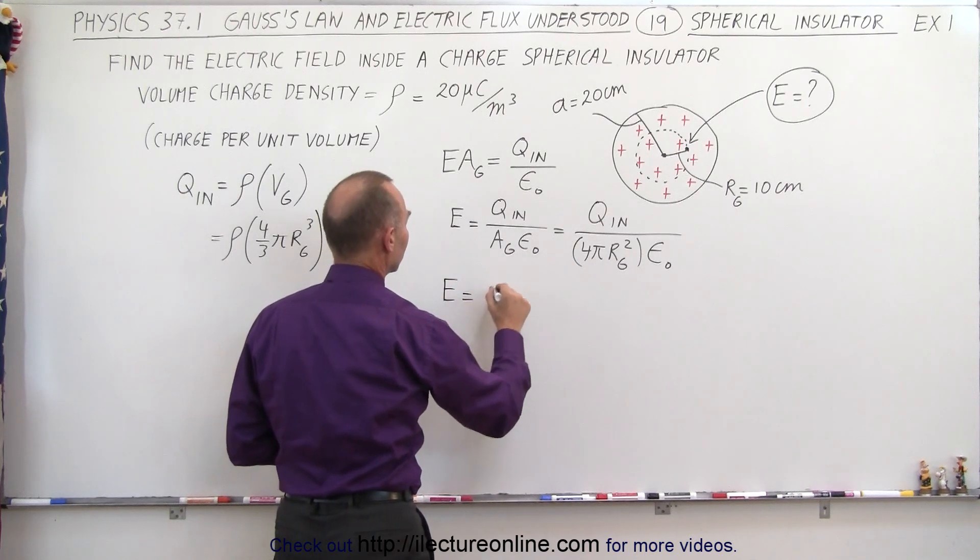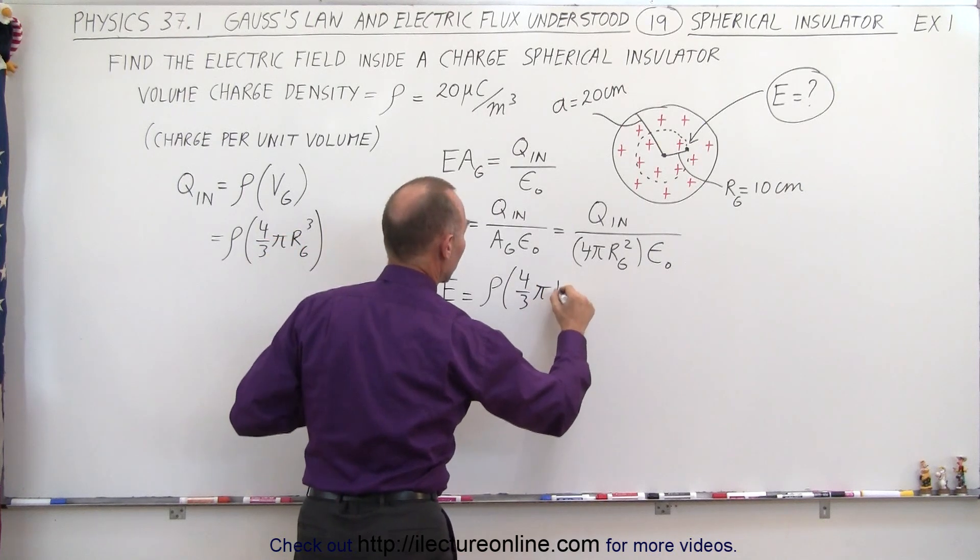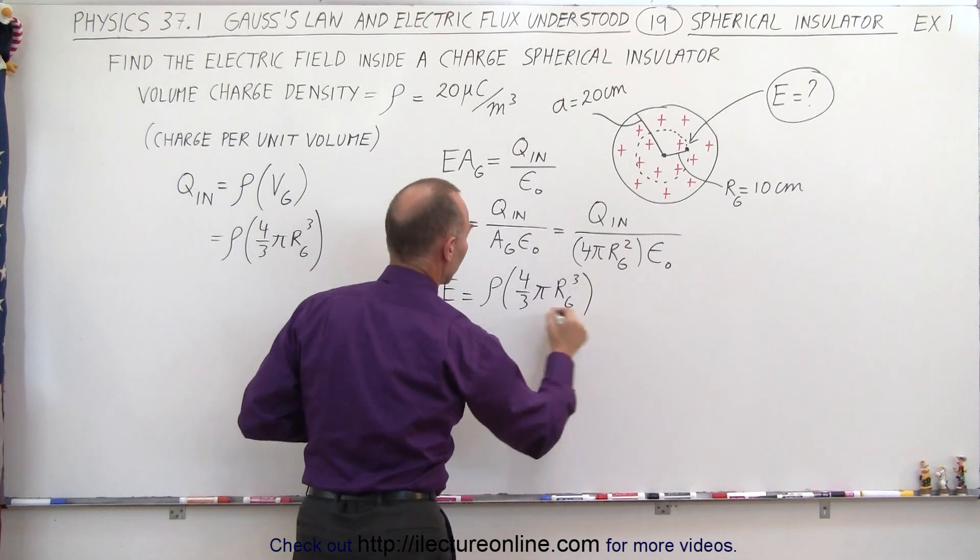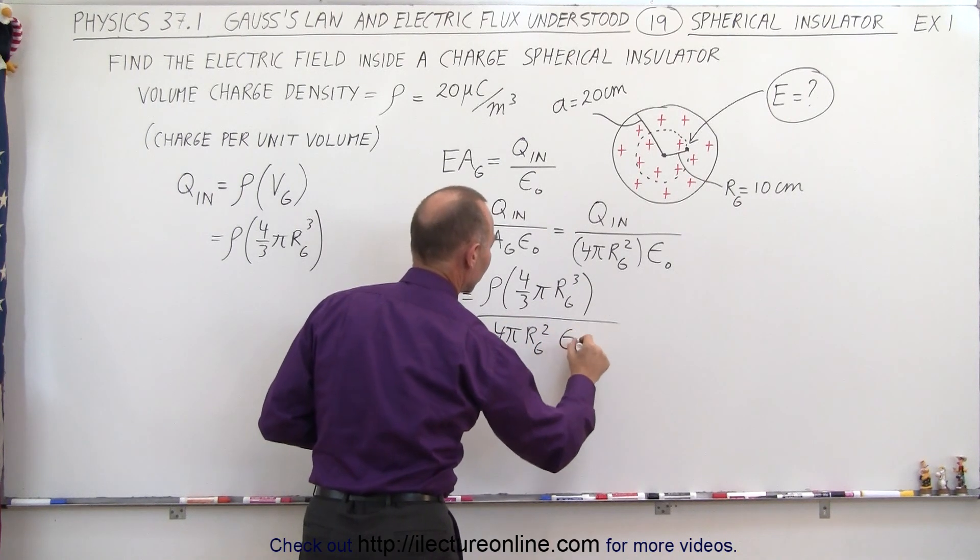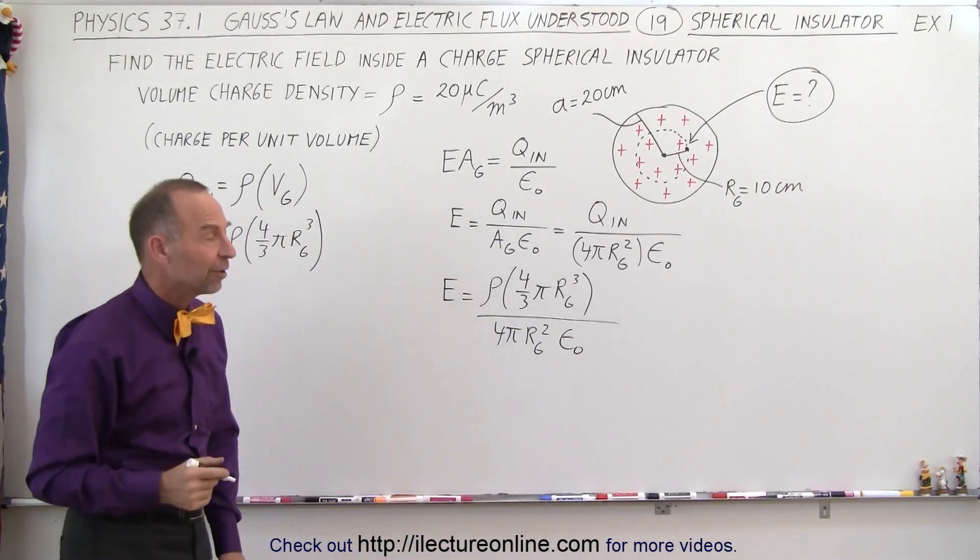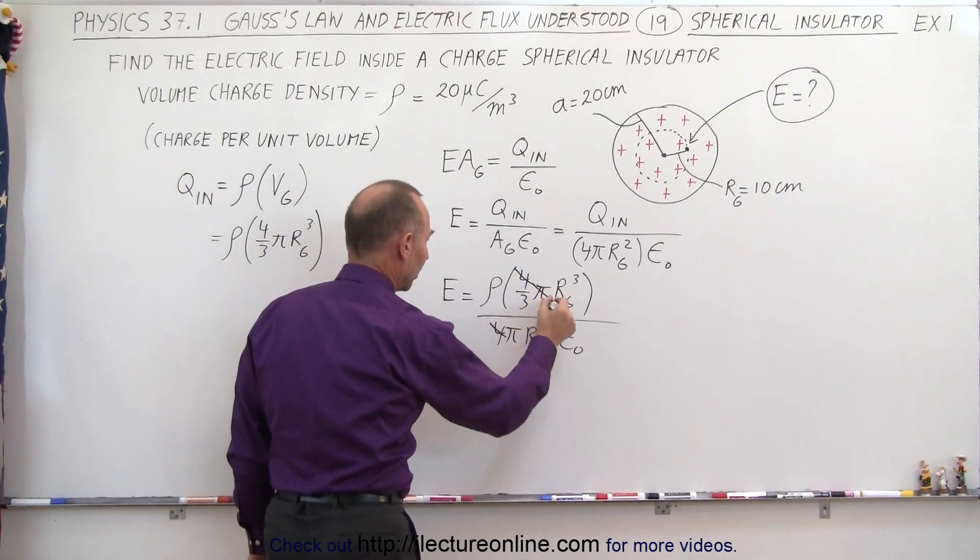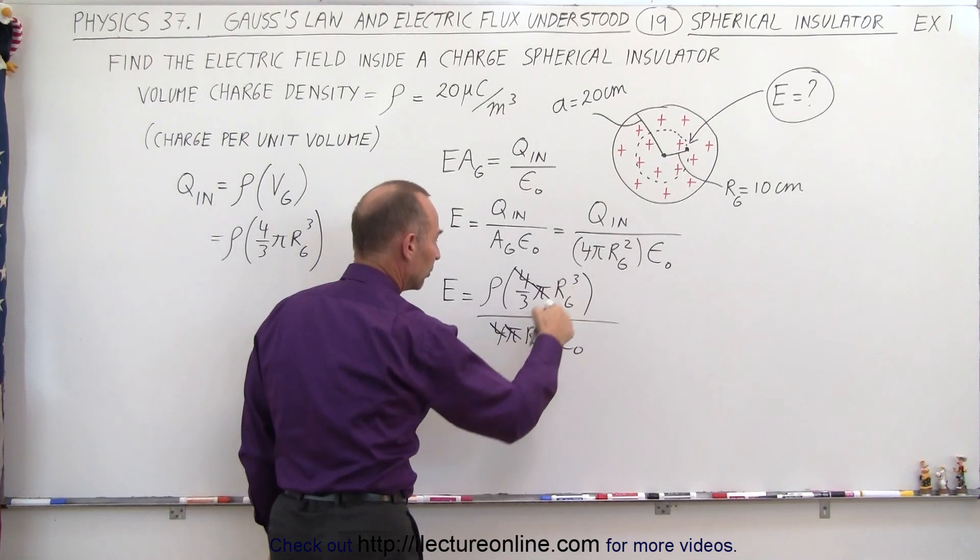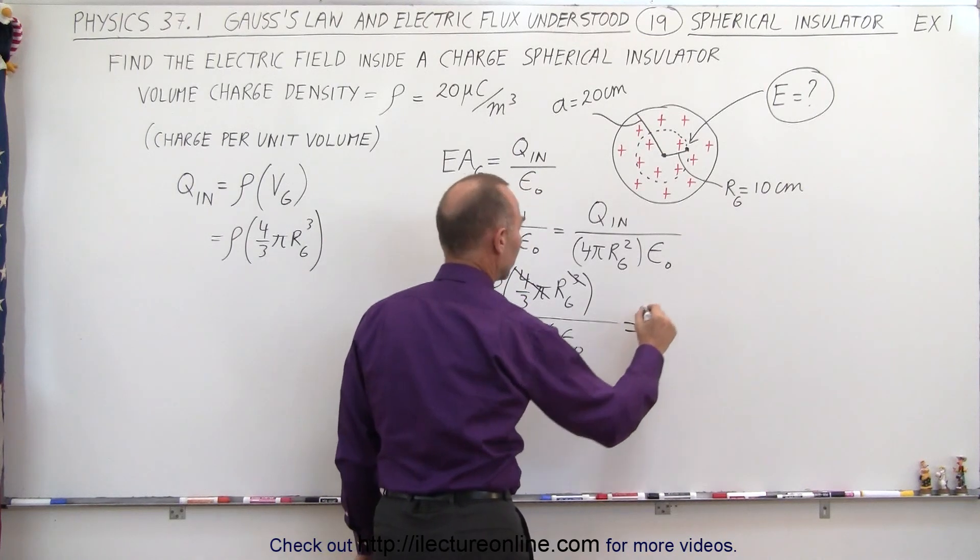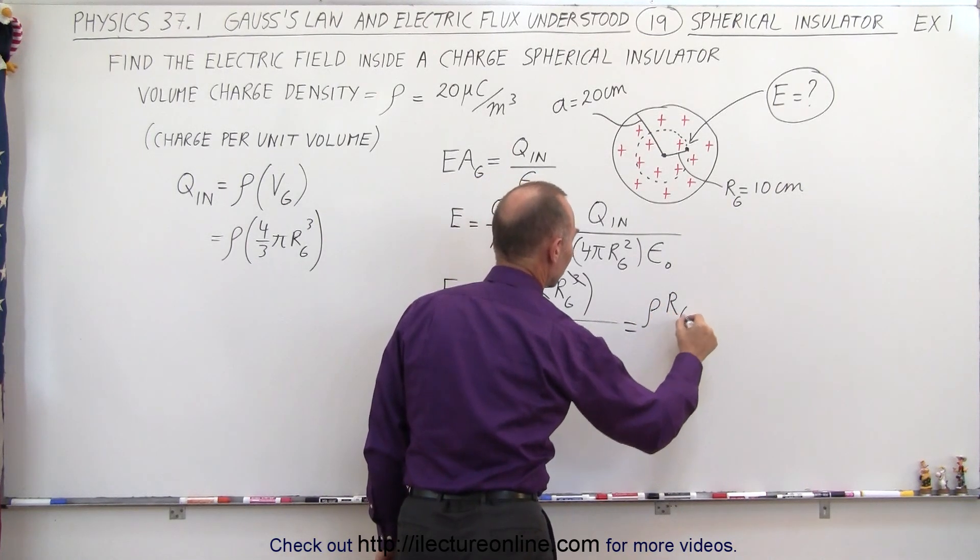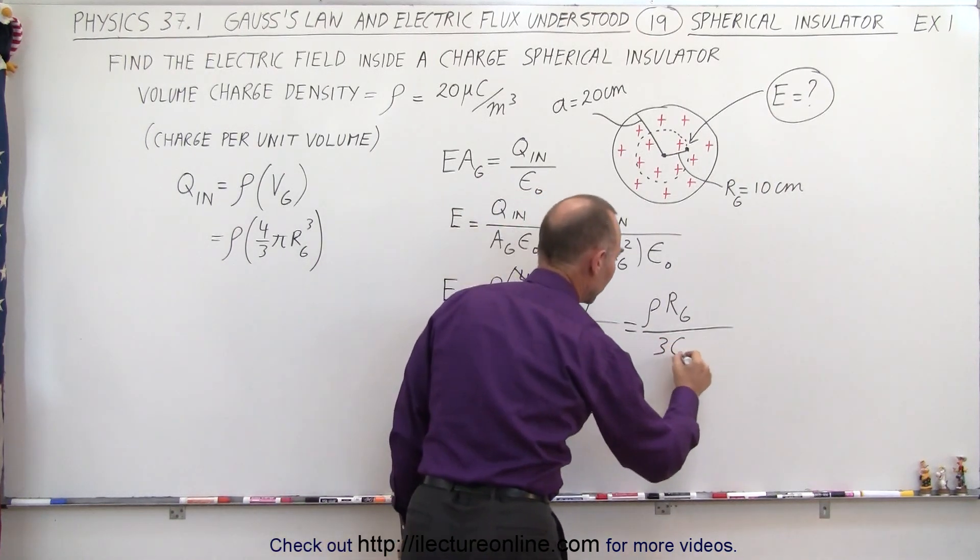So the electric field strength is equal to the density times 4/3 π R sub G cubed divided by 4π R sub G squared times epsilon sub naught, which is the permittivity of free space. We can simplify by canceling out the 4s, the πs, and here we have an R cubed and an R squared. That leaves us in the numerator with the density times the radius of the Gaussian surface. And in the denominator, we get the 3 and the epsilon sub naught.